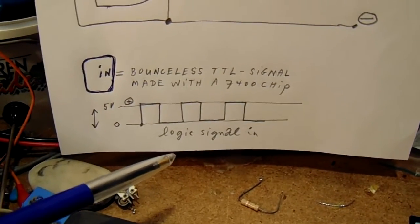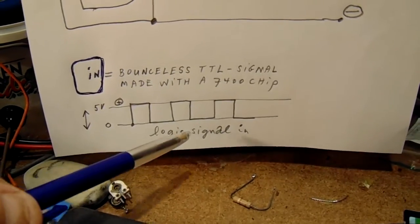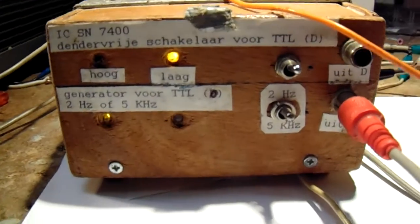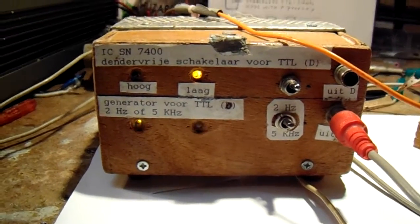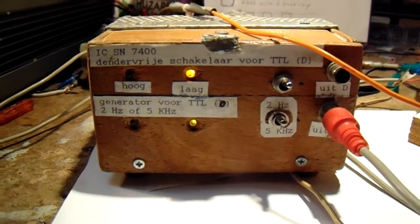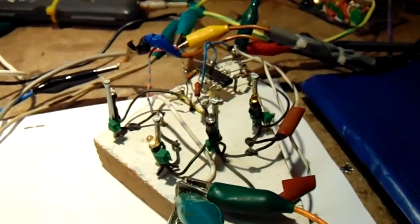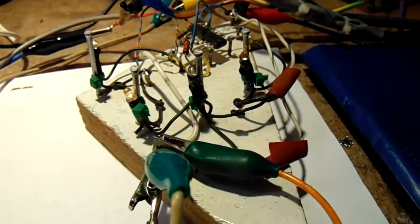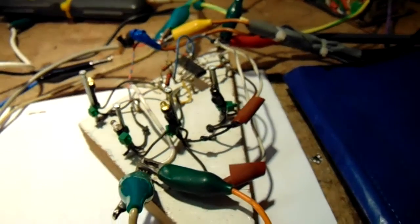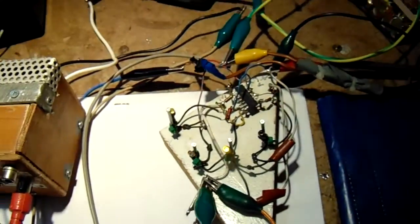This is how it has to be. This is 0 and 5 volts. So this is the logic input signal. It's generated here by this bounceless switch working at the moment on approximately 2 hertz. That means the chip gets logic signals, and you can hear and see them. I want to demonstrate it better.